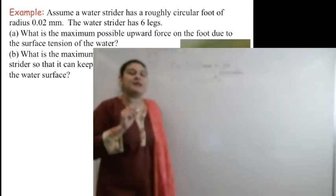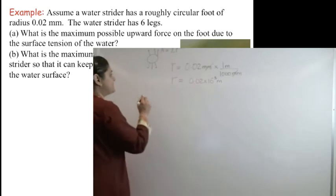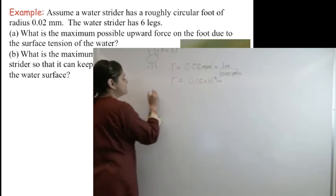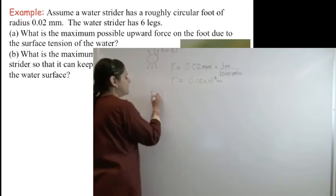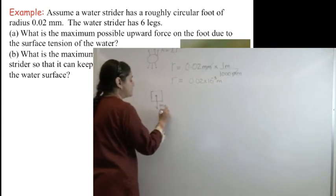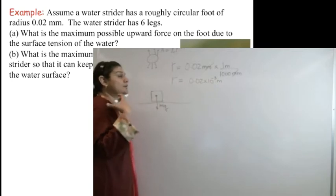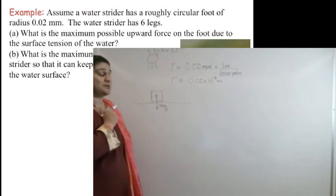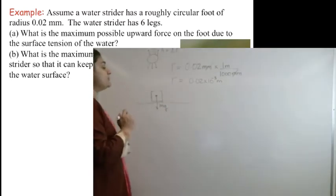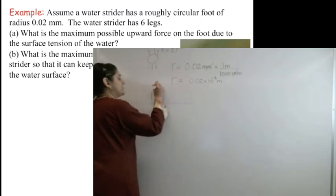It asks me, what is the maximum upward force on the foot due to the surface tension? In order to do that, I need to draw a free body diagram. This is my strider now in a free body diagram. I know that there is always a weight that acts downward, and this water strider is sitting, whether on the ground or on water, weight is always going to be downward. Now, the upward force that is going to be provided by the surface tension of the water is going to be given by F_up.